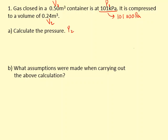So I know that P1V1 is a constant, and that's going to equal P2V2. So P1V1 equals P2, which I don't know, times 0.24. If I rearrange that, I get P2 of 210,417 pascals, which is 210 kilopascals.